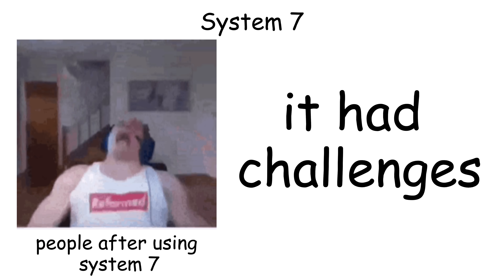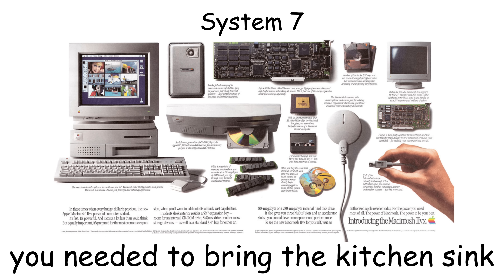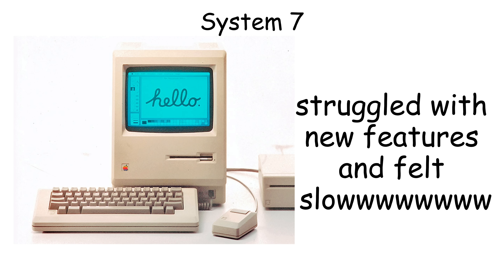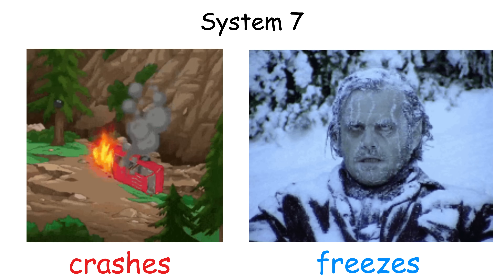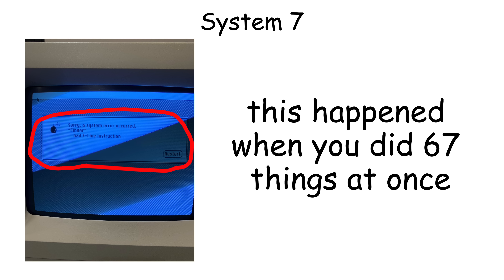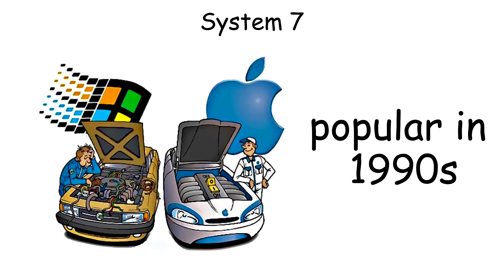However, System 7 had challenges. It was much heavier than previous versions, requiring more powerful hardware to run smoothly. Older Macs struggled with the new features and often felt sluggish. System 7 was also known for occasional crashes and freezes, especially when running too many applications. But despite these issues, System 7 remained popular throughout the early 1990s.